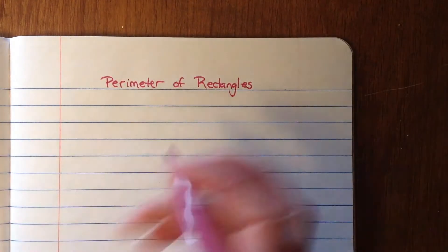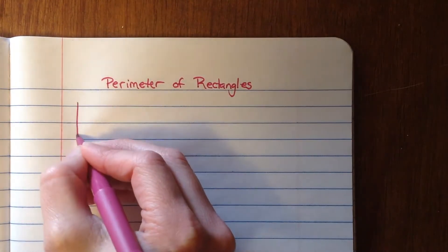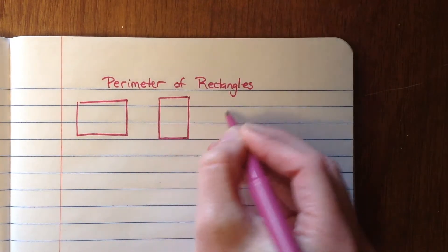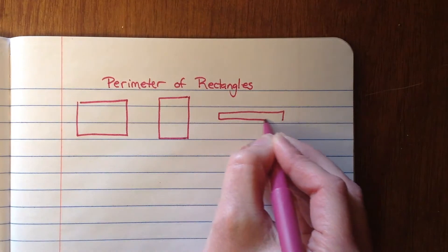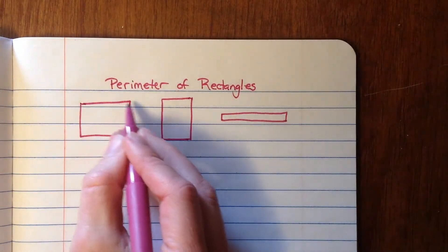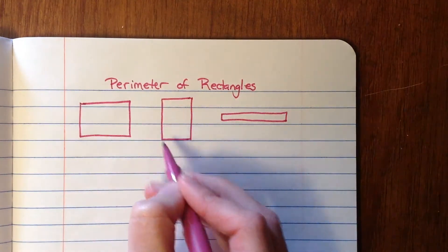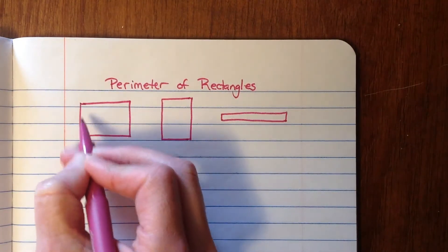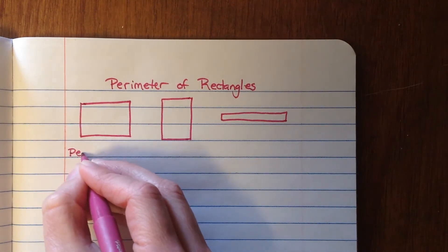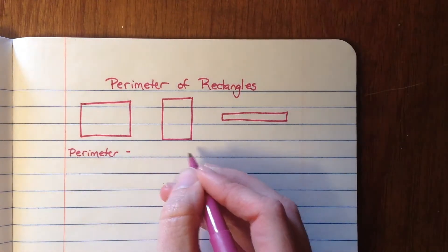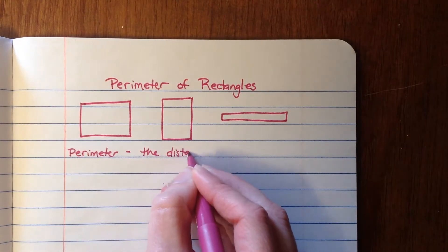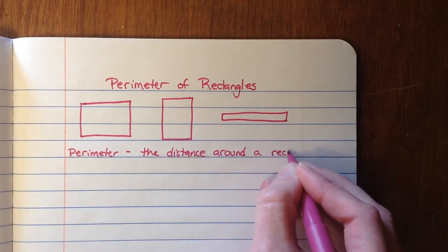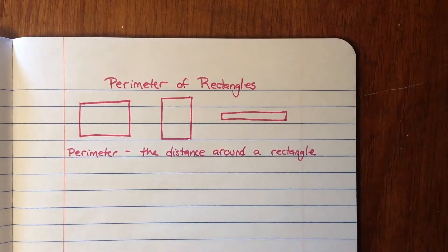If you think about the shape of a rectangle, you can have a rectangle that looks like this, or you might have a rectangle that looks like this, or maybe even something that's kind of short and skinny. When we're talking about perimeter, we're talking about the distance around the edge — similar to how circumference is the distance around a circle, perimeter refers to the outside edge or the distance around a rectangle.